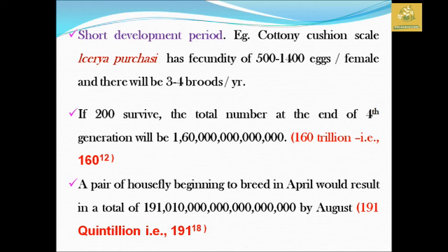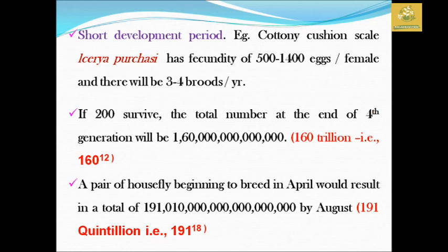Insects also have a short development period. The cottony cushion scale, for example, lays 500 to 1,400 eggs per female and can breed more than three to four generations per year, going through the mating process three to four times per year. This high reproductive rate means the total number of individuals in each generation grows enormously — greater than even Jeff Bezos's net worth of 160 trillion, reaching 191 quintillion. This is how the breeding capacity works in insects.